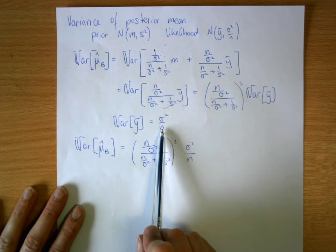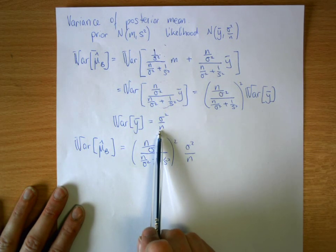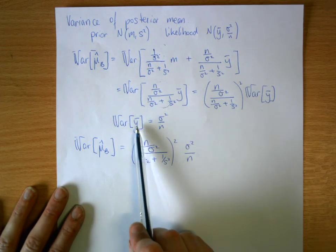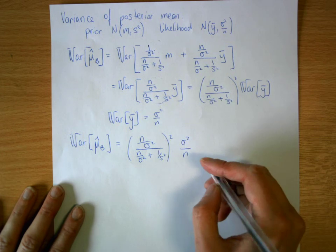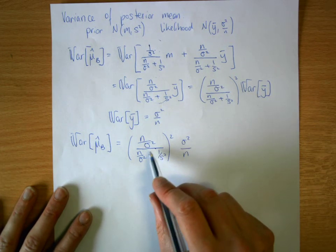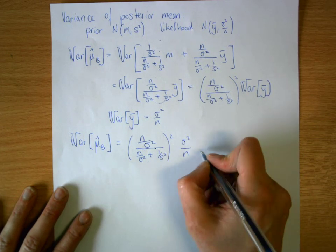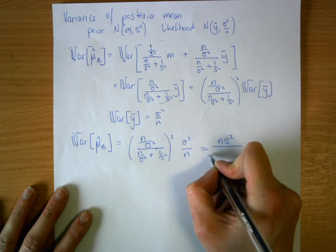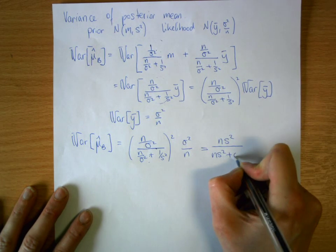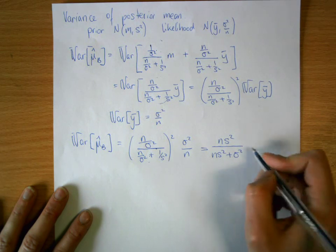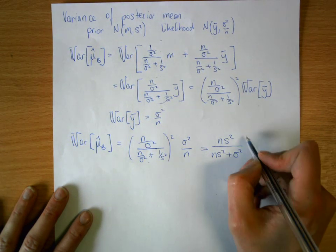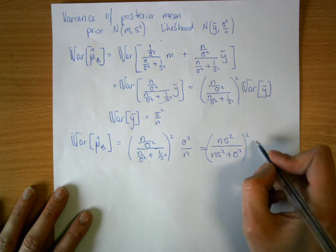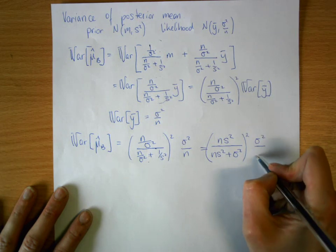Note that the variance of the frequentist estimator is σ²/n, since the frequentist estimator is just y-bar. We can simplify the Bayesian variance to (ns²) / (ns² + σ²), all squared, times σ²/n.